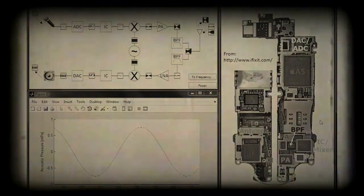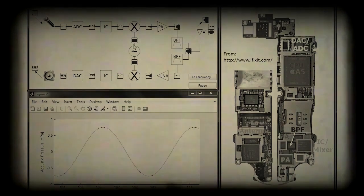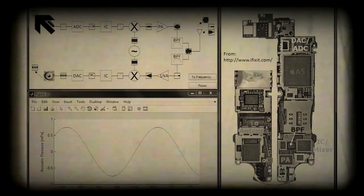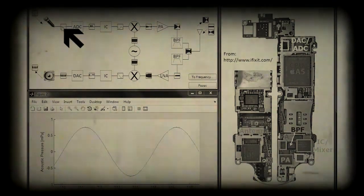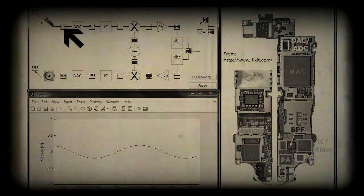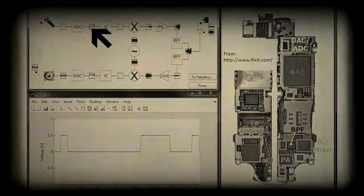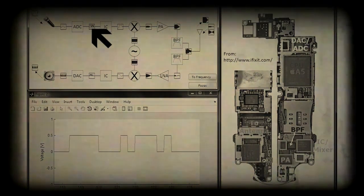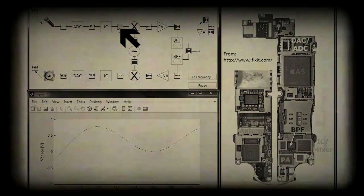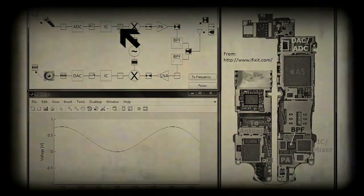Let's follow a voice signal through the phone to see how it's processed. First, your voice, which is just a pressure wave, is converted by a microphone to an electrical signal. This electrical signal is then digitized so that it can be modified by software in whatever way we deem necessary. Once it is modified, it is transformed into an analog signal.